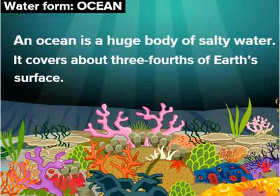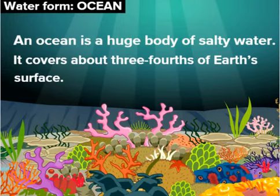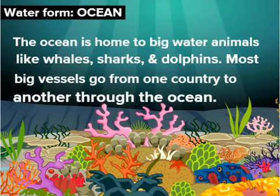Ocean. An ocean is a huge body of salty water. It covers about three-fourths of Earth's surface. The ocean is home to big water animals like whales, sharks, and turtles.